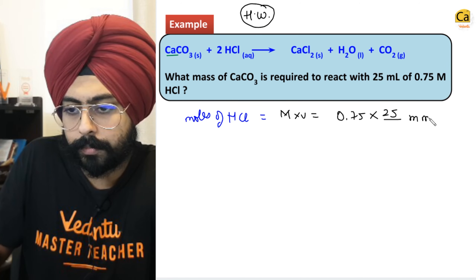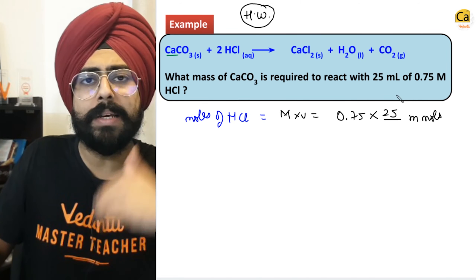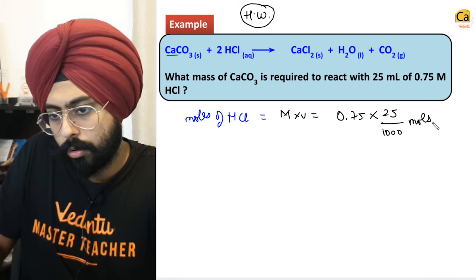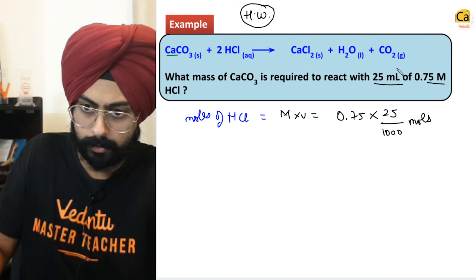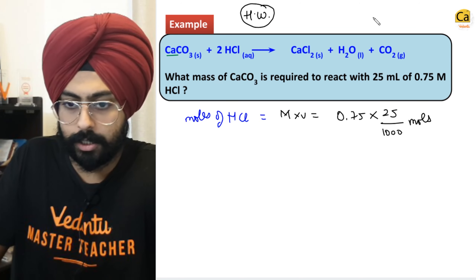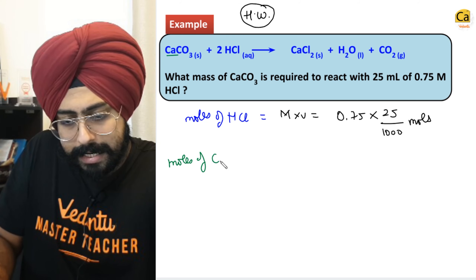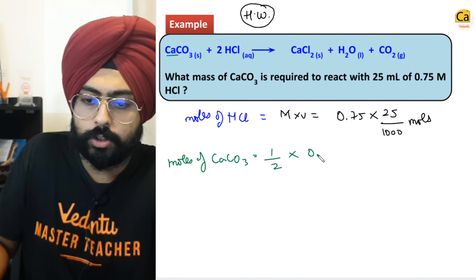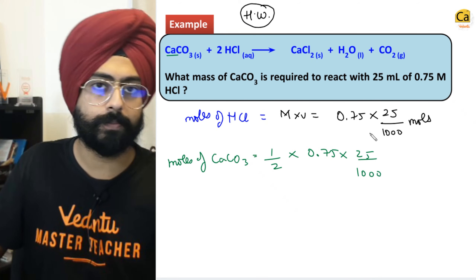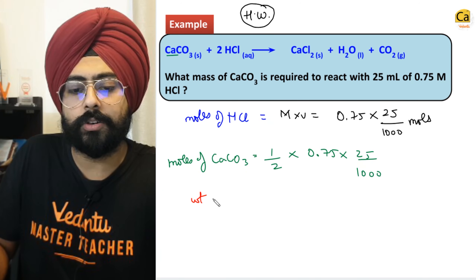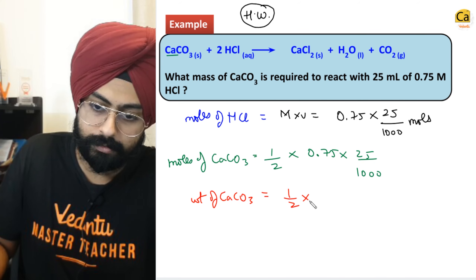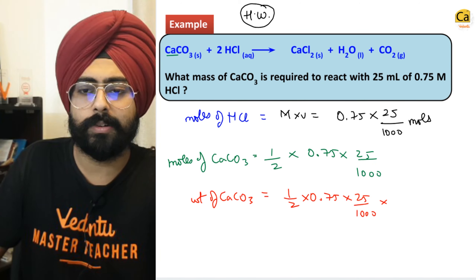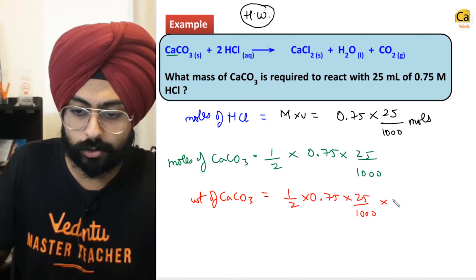Milliliters multiplied by molarity gives you millimoles. Moles of CaCO3 will be half the number of moles of HCl. So moles of CaCO3 = 0.5 × 0.75 × 25/1000. Weight of CaCO3 = 0.5 × 0.75 × (25/1000) × 100. Molecular weight of CaCO3 is simply 100.